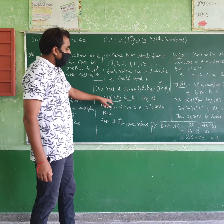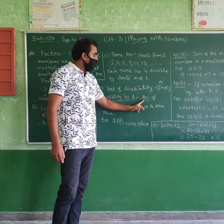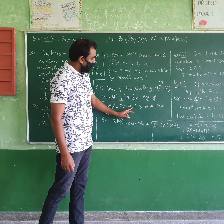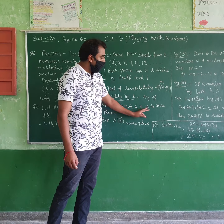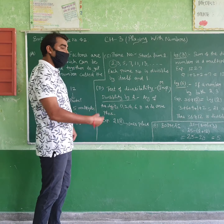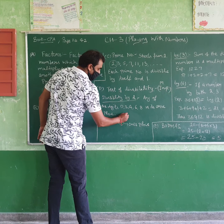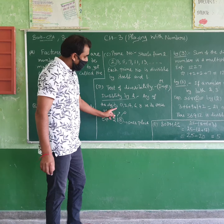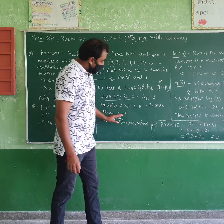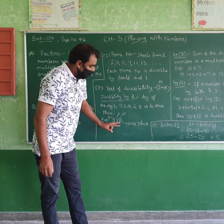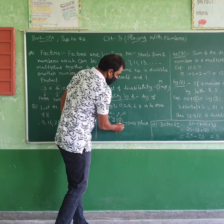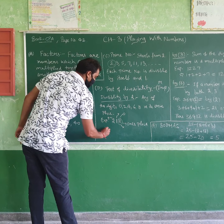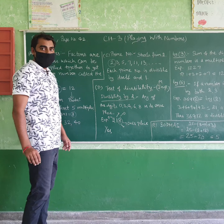First, divisibility by 2. If 0, 2, 4, 6, or 8 appears in the ones place of a number, then that number is divisible by 2. The ones place is the last digit on the right. If it ends in one of these digits, it is divisible by 2.